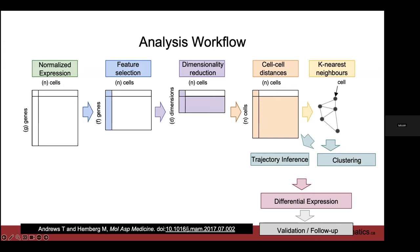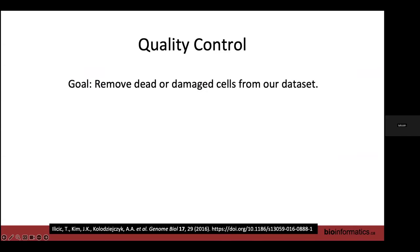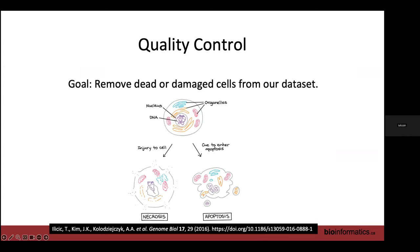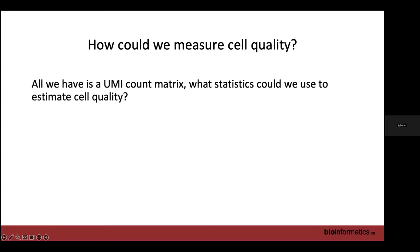If you make a mistake at the start, everything downstream will be full of errors as well. Quality control's purpose is to remove dead or damaged cells from our dataset. There are lots of ways for cells to die — necrosis from being damaged during handling, stress-triggered apoptosis, or they can be sheared in half while we're trying to dissociate our tissue.